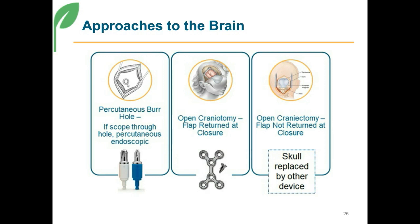The third kind is the craniectomy. The craniectomy is just what it says — removing a piece of the skull — and it does not go back. For whatever reason, it is either broken in a fracture, it is diseased, it is the wrong size or shape; something is wrong with it and it does not go back. They are then going to replace the skull with something else, such as metal mesh and metal plate. These days more and more you're seeing 3D molded plastic plates, or even plastic mesh, to take the place of that bone.